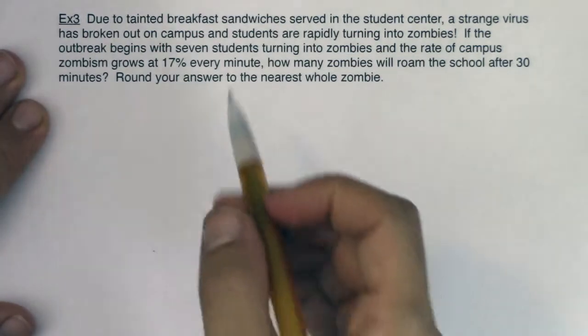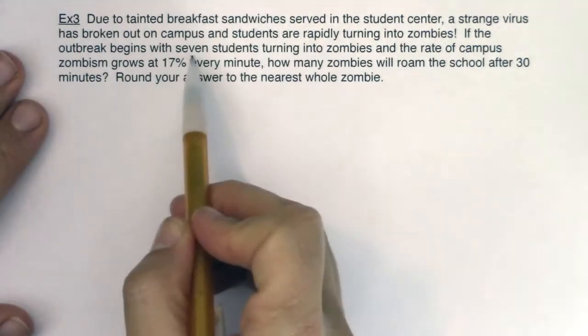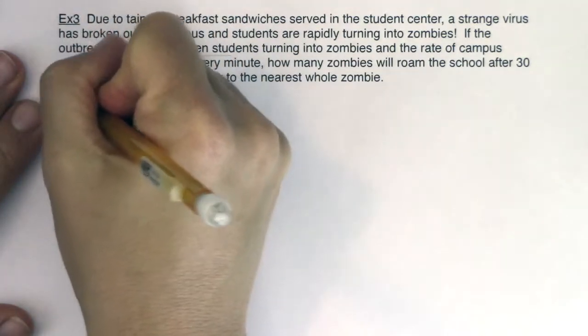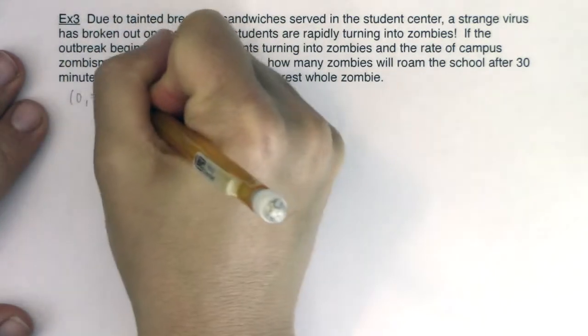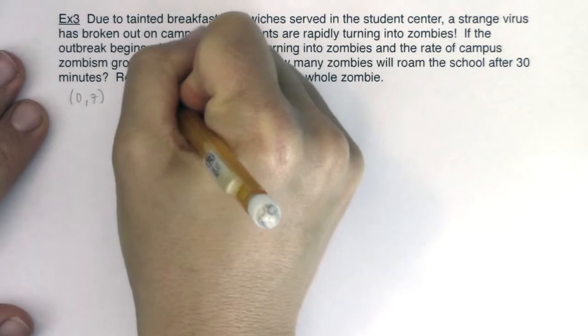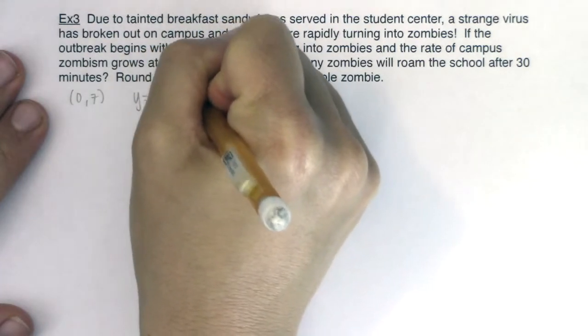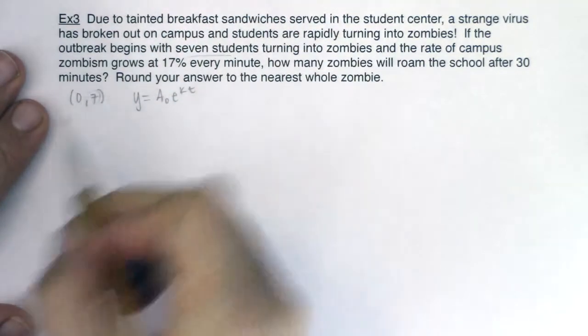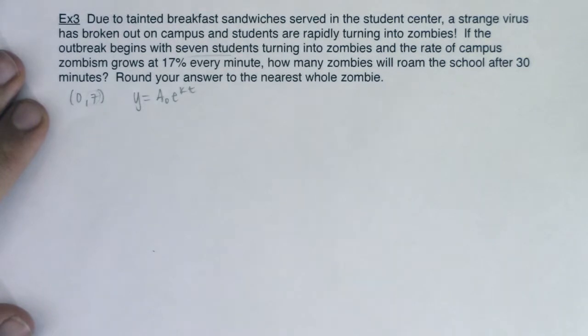What I want to do is think about ordered pairs and I can hear one of them right, they gave me the initial amount so I hear (0,7) and I also know I'm going to use this a sub 0 e to the kt.